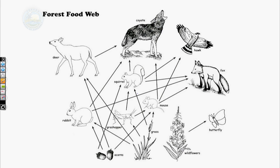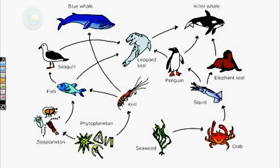Here is a forest food web. These are not organisms found locally, but your syllabus requires knowledge of non-local animals too. For example, grass eaten by deer, which is then eaten by a coyote. Another chain: grass eaten by squirrel, eaten by coyote. This squirrel is also eaten by a hawk. So this food web shows that one animal can provide food for several different organisms.